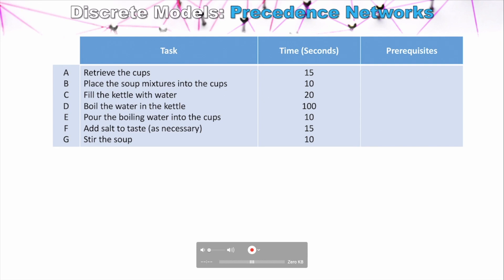Naturally, when tasks are simple, us humans are really good at being efficient. So this example of making some cup of soups — we can naturally see what order we should do these tasks in to be as efficient as possible. We're not going to just fill the kettle with water and sit there watching it boil while not doing anything else. A precedence network allows us to visually show the order of tasks and what needs to be done before you can commence the next task — which is what a prerequisite is.